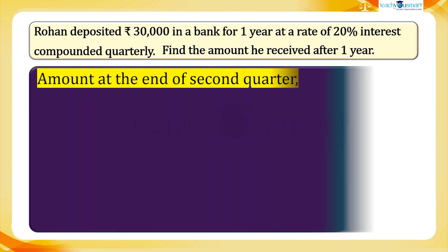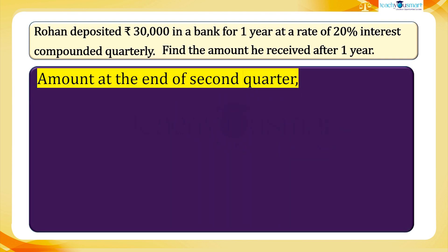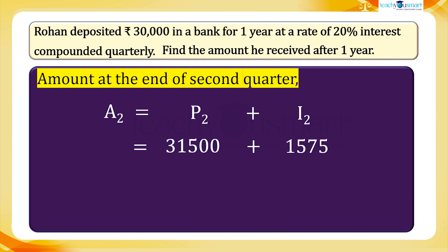Then the amount at the end of the second quarter: A2 equals P2 plus I2, equals 31,500 plus 1,575. A2 equals 33,075 rupees. This is the principal for the third period.